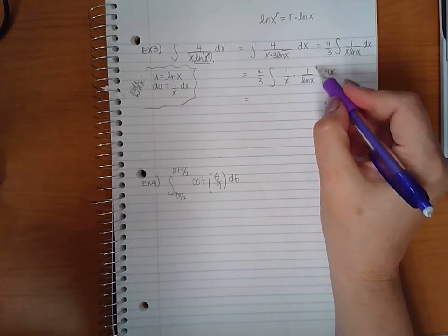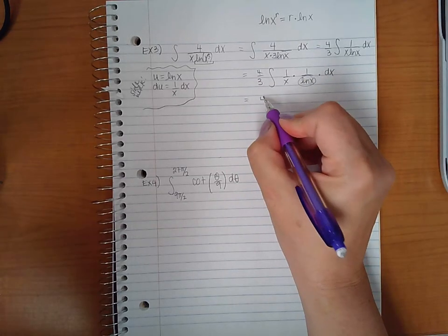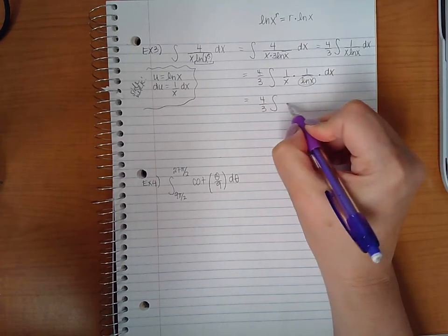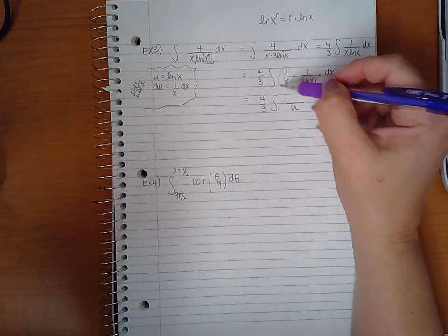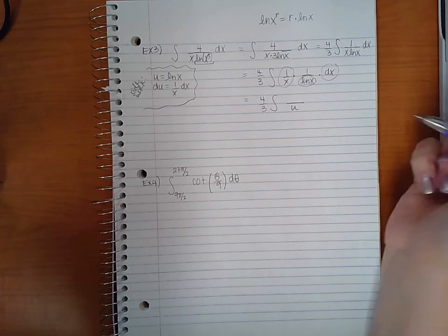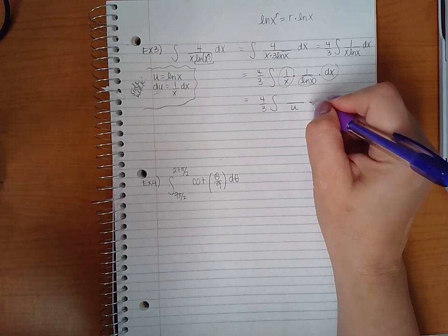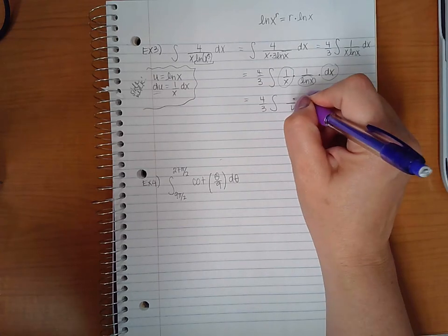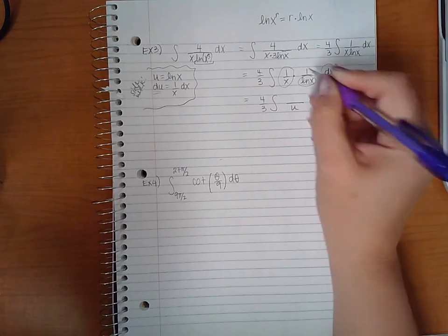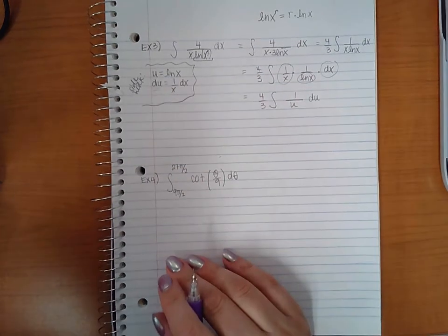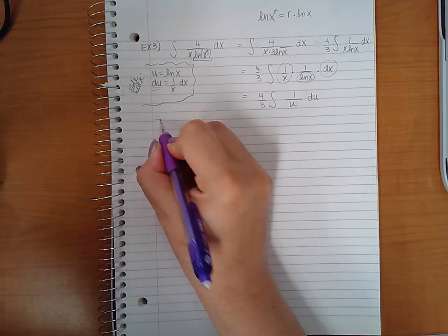It helps me to identify better that this is going to be my u, so u is going to go downstairs and 1 over x times dx is going to be my du. So I can put it upstairs or on the side.